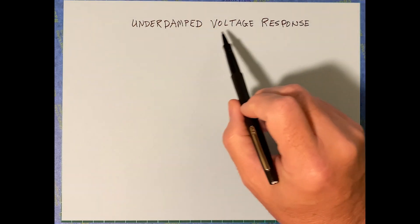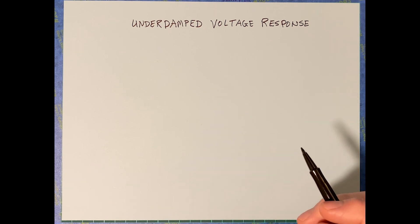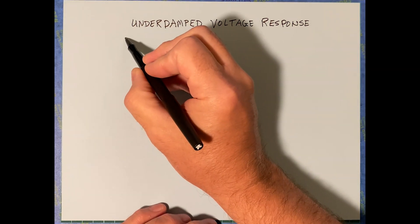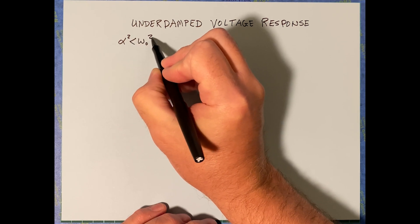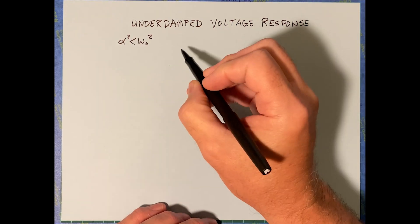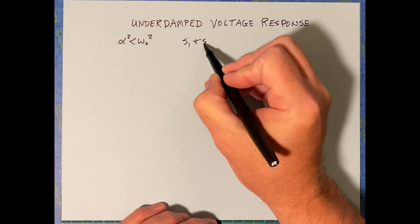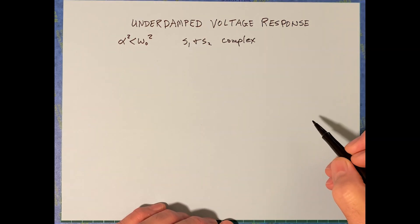We're going to cover the underdamped voltage response now, and we'll probably also get to critically damped before the end of this video. This is the one where we have alpha squared less than omega naught squared — the case where S1 and S2 are complex numbers.